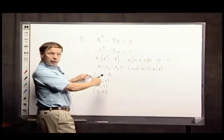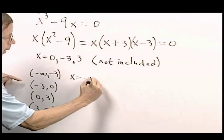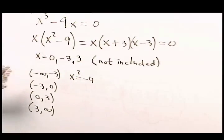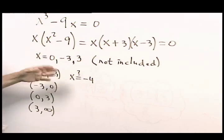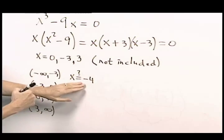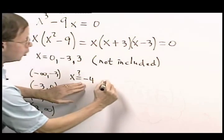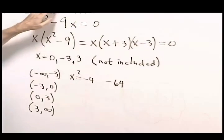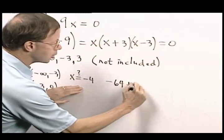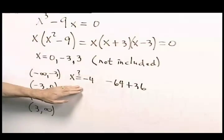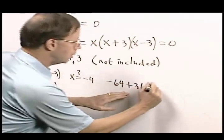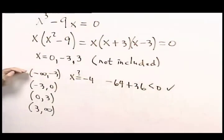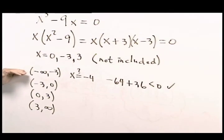When I plug in, say, negative 4, I'm going to put a little question mark there. Maybe it is part of the solution, maybe it isn't. But I'm going to now try this back in the original. I'll do the calculations. You can verify that they're correct. Negative 4 cubed is negative 64. Minus 9 times negative 4 is plus 36. And what you'll observe here is that, yes, this number is less than 0. So this interval will be part of my solution.